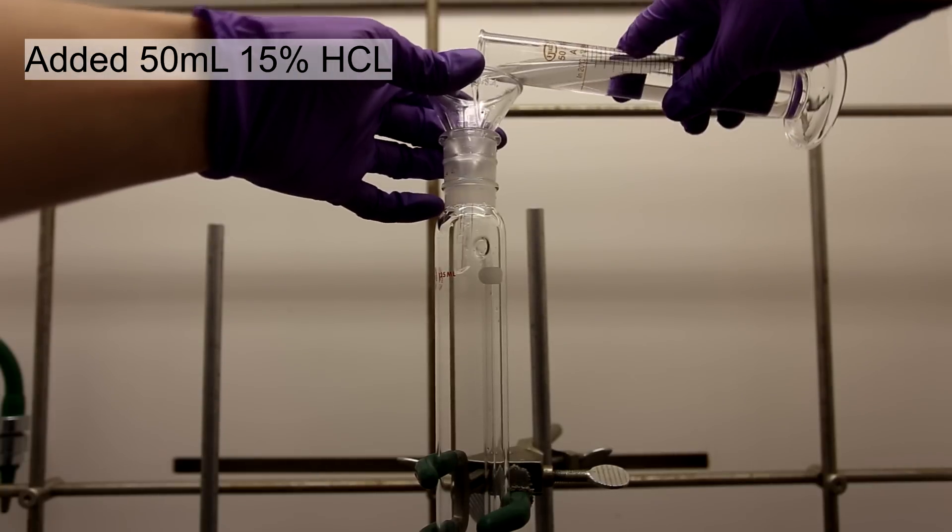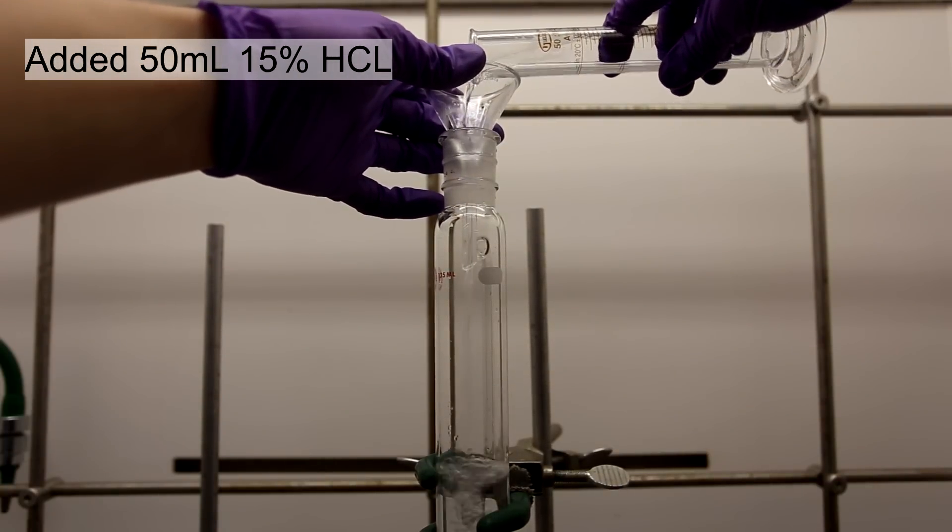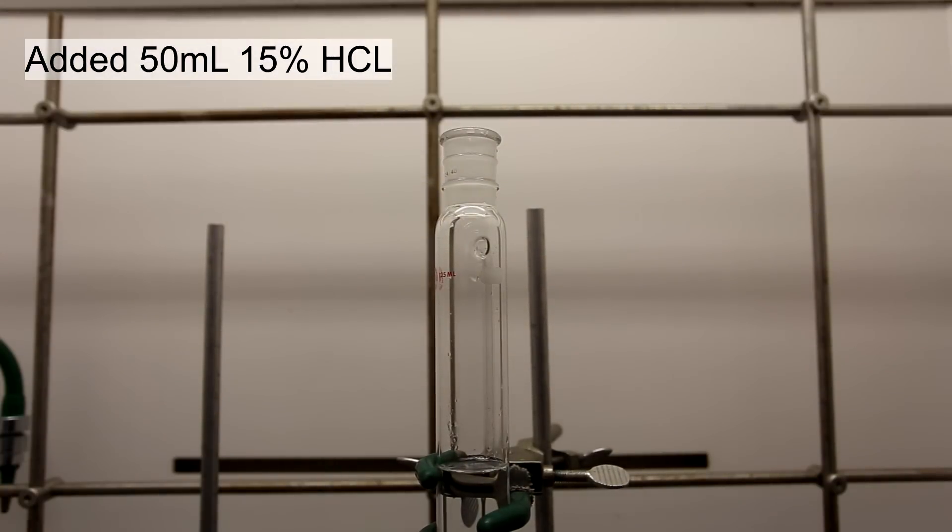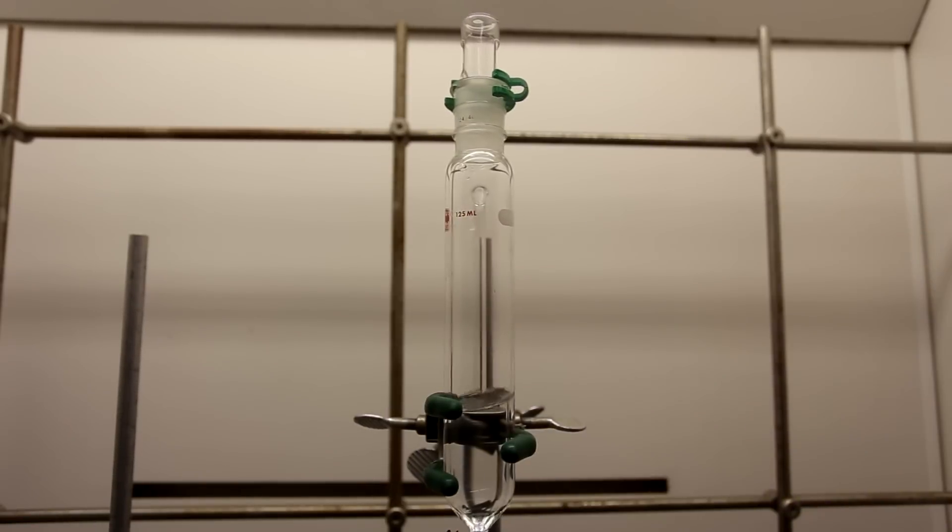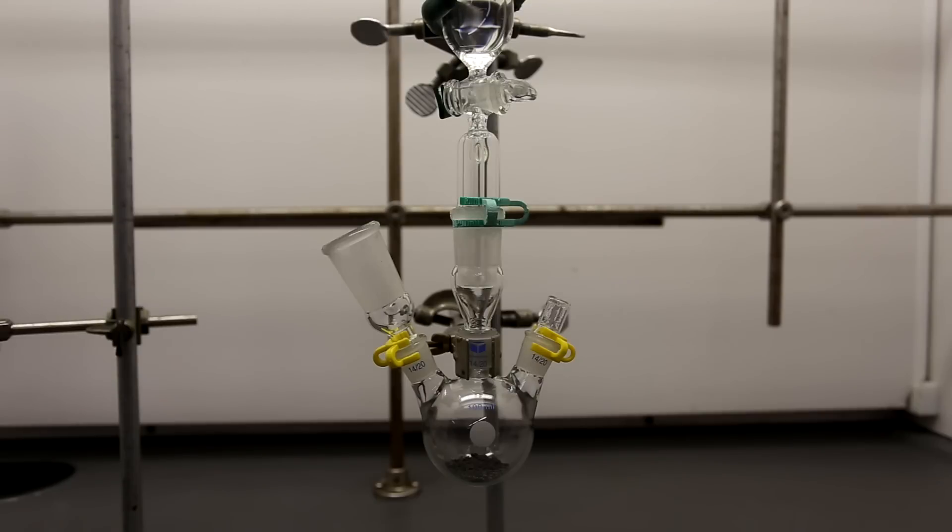To an addition funnel, 50 milliliters of 15% hydrochloric acid is added. The addition funnel is then stoppered and clamped. The center neck is fitted with an adapter and attached to the addition funnel.